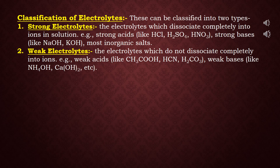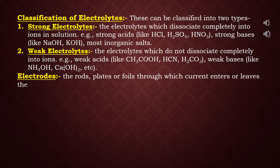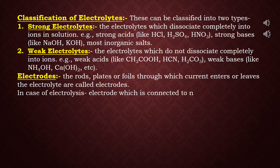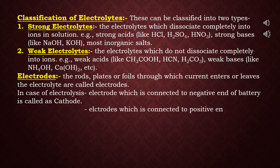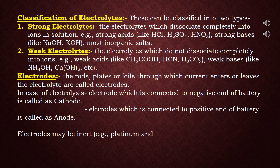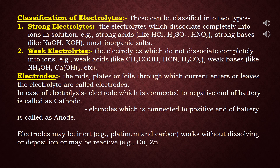Our next term is electrodes — the rods, plates, or foils through which current enters or leaves the electrolyte. In case of electrolysis, the electrode connected to the negative end of the battery is called the cathode, and the electrode connected to the positive end of the battery is called the anode. Electrodes may be inert, for example platinum and carbon, which work without dissolving or deposition, or may be reactive, for example copper, zinc, and other metals, which work with dissolution and deposition. Inert electrodes do not react or participate in the chemical reaction.